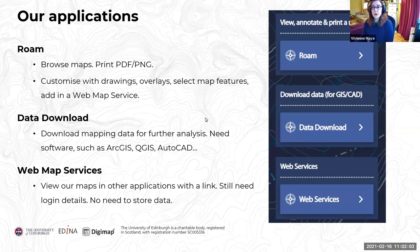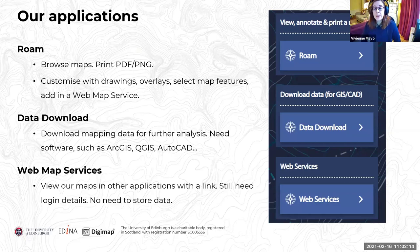Moving on to our applications, I'm going to give you a demo of Roam today. Roam is our mapper — it allows you to browse all of the maps we have available. You can also print them as PDF or as a PNG image. There is a Roam application for each collection; these vary by collection, but the standard layout and functions are the same.